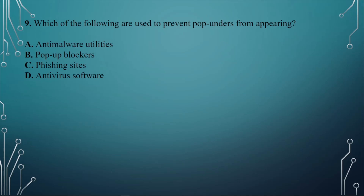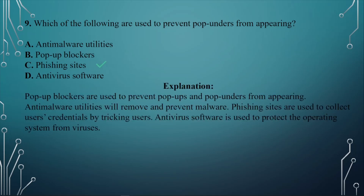Question number nine: Which of the following are used to prevent pop-unders from appearing? A. Anti-malware utilities. B. Pop-up blockers. C. Phishing sites. D. Anti-malware software. The answer is B, pop-up blockers. Pop-up blockers are used to prevent pop-ups and pop-unders from appearing. Anti-malware utilities will remove and prevent malware. Phishing sites are used to collect users' credentials by tricking them. Anti-malware software protects the operating system from viruses.